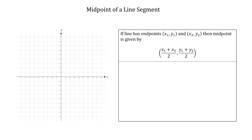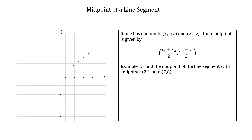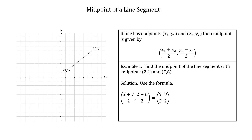Example one: find the midpoint of the line segment with endpoints (2, 2) and (7, 6). We draw the line segment and apply the formula. The x coordinate of the midpoint is (2 + 7)/2 = 9/2, and the y coordinate is (2 + 6)/2 = 8/2 = 4. So the midpoint is (4.5, 4).